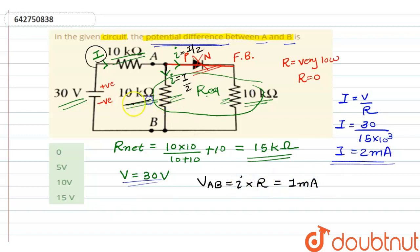R is 10 kilo-ohm. So our V-AB will be equal to 10 volts. So our final answer will be C.